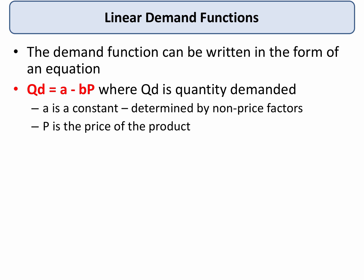QD is the quantity demanded for a product. A is a constant determined by the non-price factors that affect demand — for example, the price of a substitute product, the price of a complement, and crucially the real income of consumers. P is the price of the product.